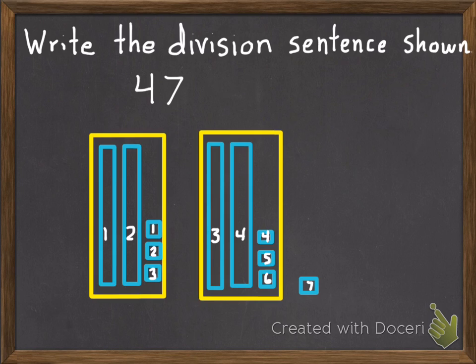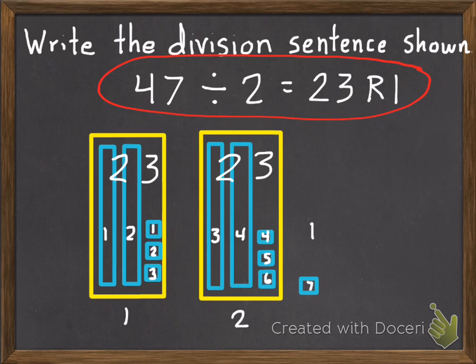And then my divisors, how many groups I have. So I have 1, 2, 2 groups. So I have 47 things divided into 2 groups. And my answer, I have 23 in each with a remainder of 1. So my division sentence is 47 divided by 2 equals 23 remainder 1.